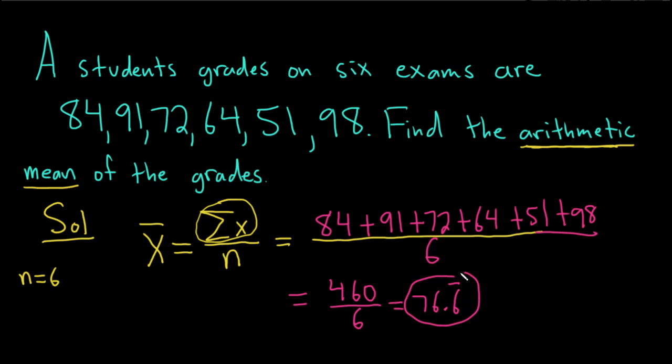So that would be the arithmetic mean of the grades or simply the average. So if you have 6 exams, you basically add them up and divide by 6.